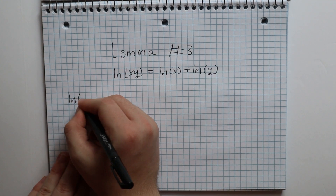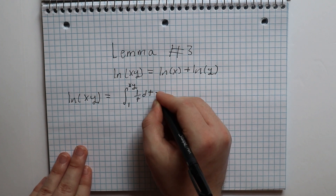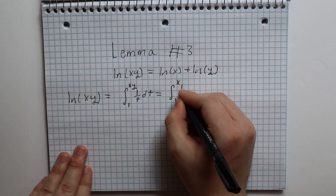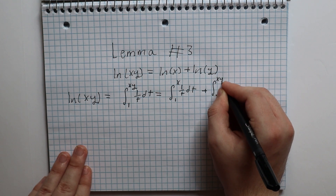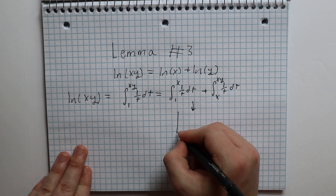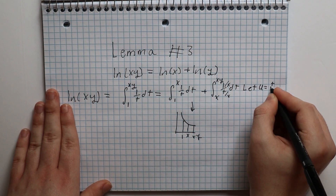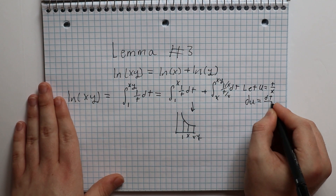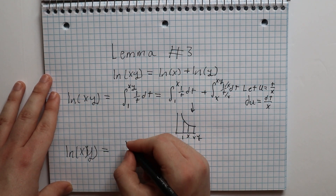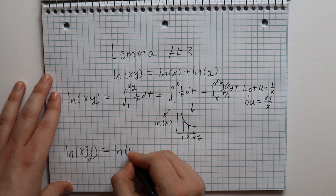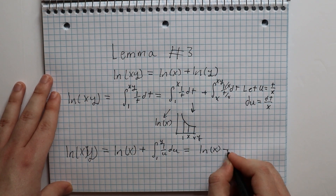Using the last fact, we can show that the natural log of x times y is equal to the integral of 1 divided by t dt from 1 to xy, just swapping the x with xy. This can be written as the integral of 1 divided by t dt from 1 to x, plus the integral of 1 divided by t dt from x to xy, because the bounds are connected and it is the exact same integral. We can now do u-substitution on the second integral, letting u equal t divided by x and du equal dt divided by x. Our integral ends up being the integral of 1 divided by u du from 1 to y, which is the natural log of y. So the natural log of xy is indeed equal to the natural log of x plus the natural log of y, concluding our third lemma.